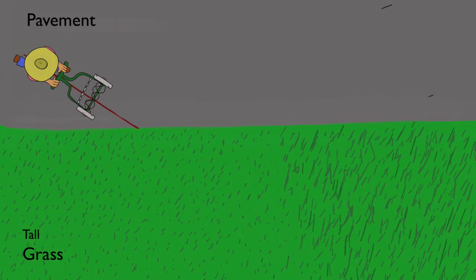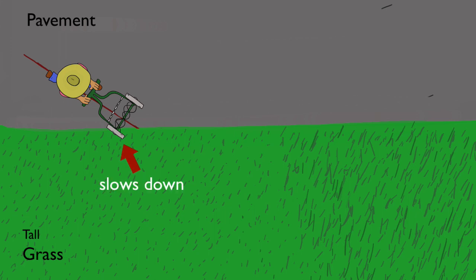Imagine a push lawnmower coming from the pavement into some tall grass at an angle. The side of the lawnmower that hits the grass first starts to slow down first. Why? Because of the interactions with the tall grass.